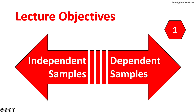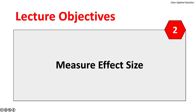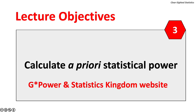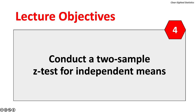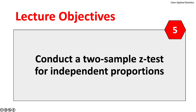This lecture has ten objectives. First, distinguish independent from dependent samples. Second, measure and interpret effect size. Third, calculate a priori statistical power for a variety of two-sample tests about means and proportions using G-Power and calculators on the Statistics Kingdom website. Fourth, conduct a two-sample z-test for independent means.